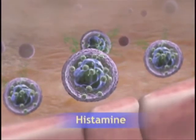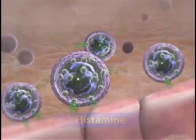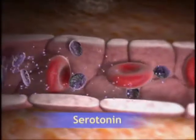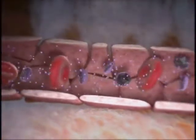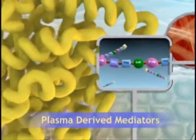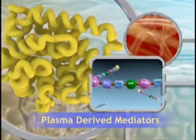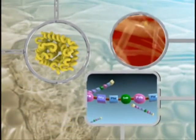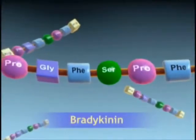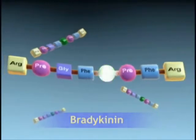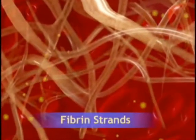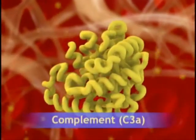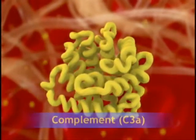Histamine is released in response to a variety of stimuli and causes dilation and increased permeability of capillaries. Serotonin, another cell-derived mediator, performs similar actions. The three major plasma-derived mediators are present in the plasma in precursor forms that must be activated, usually by a series of proteolytic enzymes. The kinins increase capillary permeability and stimulate pain receptors. The clotting system traps exudates, microorganisms, and foreign bodies. The complement cascade causes vasodilation, promotes leukocyte chemotaxis, and augments phagocytosis.